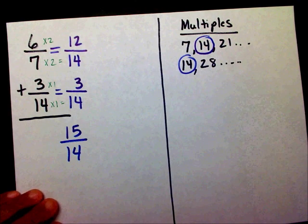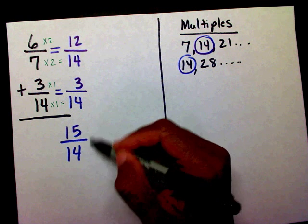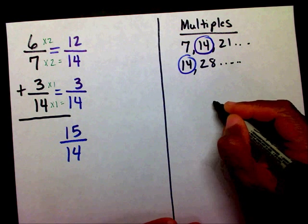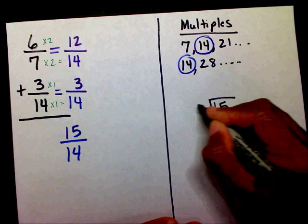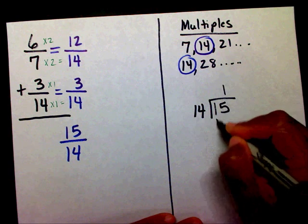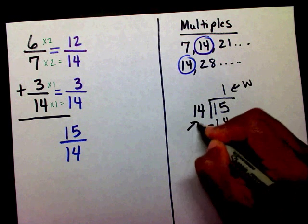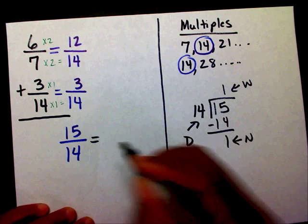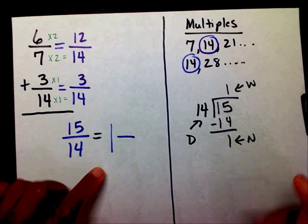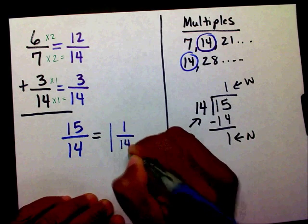That created an improper fraction, so now I need to change 15/14 into a mixed number. I'm going to take 15 divided by 14 — 14 goes into 15 one time. After subtraction, this is my whole number, this is my numerator, and this is my denominator. So my final answer is 1 and 1/14.